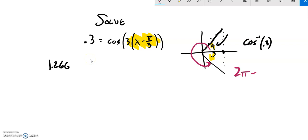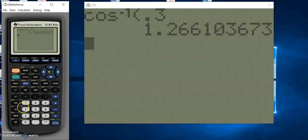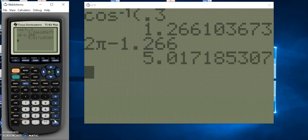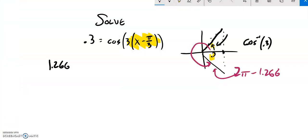I could go 2π, a full rotation, minus this angle that I was given. So 2π minus 1.266 will give me that one. Let me do that. 2π minus 1.266 equals 5.017.